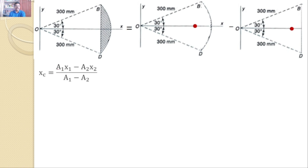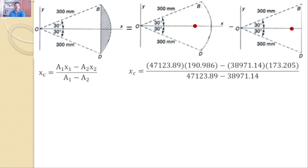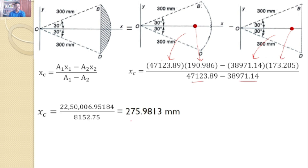Substituting into the basic formula: X_centroid = (A1 × X1 − A2 × X2) / (A1 − A2), using the area of the circular sector and the area of the triangle with their respective centroid distances, gives the centroid location as 275.9813 mm. This is the answer for the given problem.